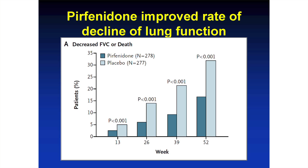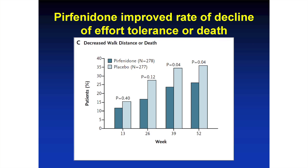This slide shows time on the x-axis and patients on the y-axis. What they measured is decreased FVC or death — essentially what proportion of patients had decreased lung function over time. The darker bars are pirfenidone and the lighter bars are the placebo. Higher bars mean more patients had worse disease. Patients who received the placebo had more worsening of their lung function compared to patients who received pirfenidone.